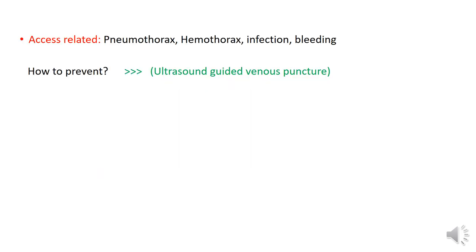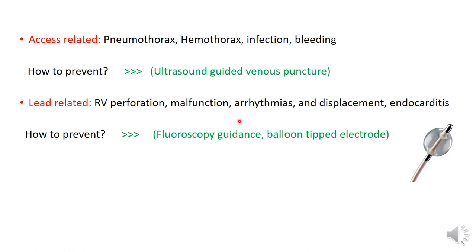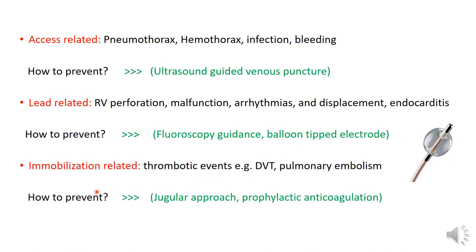Complications may be access-related: pneumothorax, hemothorax, infection, or bleeding — minimized by ultrasound-guided venous puncture. Lead-related complications include perforation, malfunction, displacement, or endocarditis — prevented by minimizing lead dwell time, using fluoroscopic or echocardiographic guidance during insertion, and using a balloon-tipped electrode which is safer than semi-rigid or rigid electrodes. Immobilization-related complications include DVT or pulmonary embolism — prevented by using jugular rather than femoral approach and prophylactic anticoagulation.